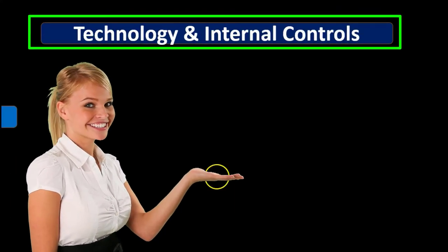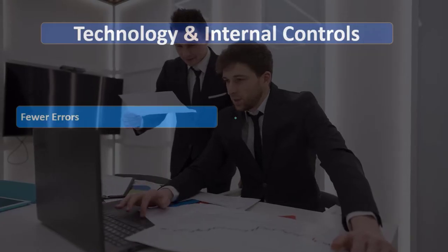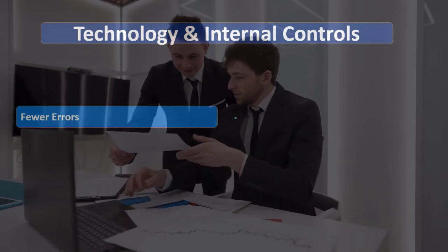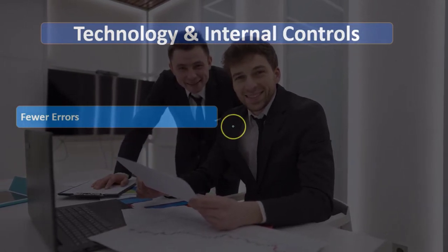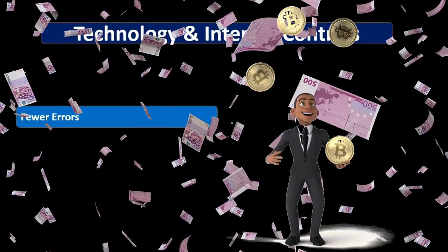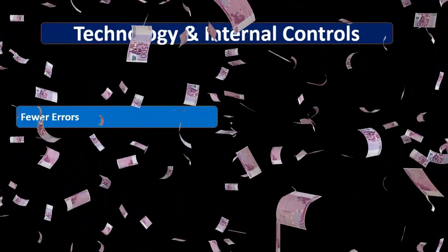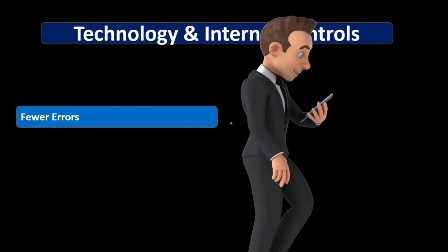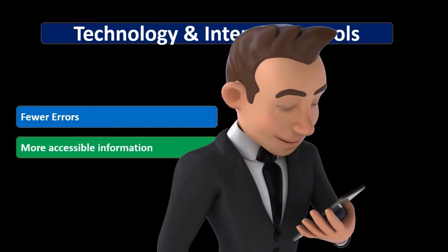Technology has pros and cons for internal controls. We have more information in a technical nature and less paperwork, with accounting information typically in a database program. One benefit is fewer errors — we're not going to have adding and subtracting errors, though we could still punch in a number incorrectly. The double-entry accounting system will help pick up some of those errors, and cross-checks can catch others. Overall, a computer system reduces errors related to those types of activities.